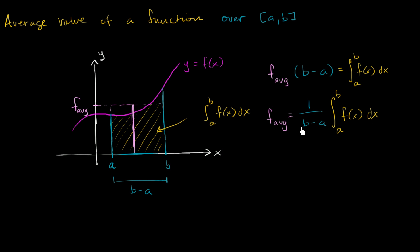Area under the curve divided by the width — that's just going to give you the average height, the average of the function. In the next video, we'll actually apply this formula to see that it's straightforward to calculate, if you can figure out the definite integral.